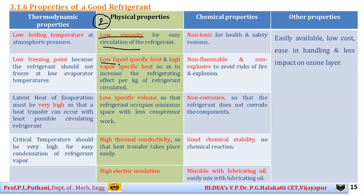The refrigerant should have low liquid specific heat and high vapor specific heat, which increases the refrigerant effect per kilogram of refrigerant circulated in the cycle. Also, in the compressor the vapor is compressed, so the specific volume comes into play. If the specific volume is as low as possible, the work required for compression is also less, and the refrigerant can pass easily through the entire network. So the refrigerant should have low specific volume.